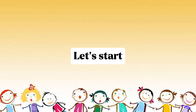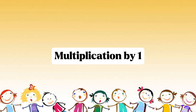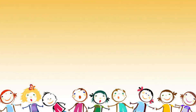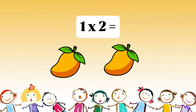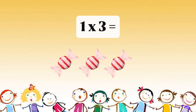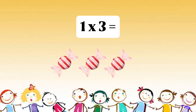Let's start. Multiplication by 1. 1 multiplied by 1, or 1 times 1, equals 1. 1 multiplied by 2, or 1 times 2, equals 2. 1 multiplied by 3, or 1 times 3, equals 3.